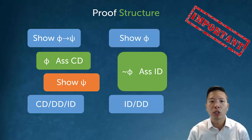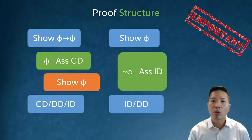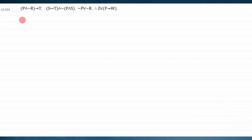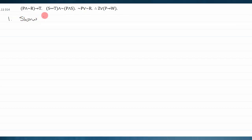Part of proof structure is knowing how to deal with conditionals and regular statements. For a conditional, we do a conditional derivation; for anything else, we always do an assume ID. This is our first derivation with all 10 basic rules available. We'll use the rules and also think about structure and other tricks to help navigate this derivation.